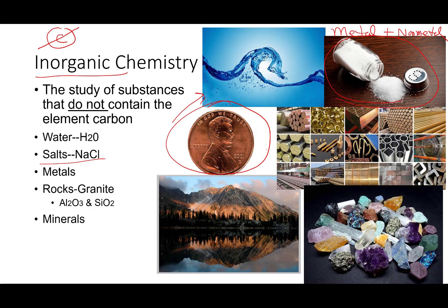Pure metals — everything from silver, gold, copper, molybdenum, tungsten, steel, nickel, chromium, and the list goes on. All of those and metallurgy are inorganic chemistry. Rocks — the granite that makes our mountains, the basalt that makes the ocean floor — all of those are inorganic. All of the gemstones, precious and non-precious, found on planet Earth — all of those are inorganic chemistry.